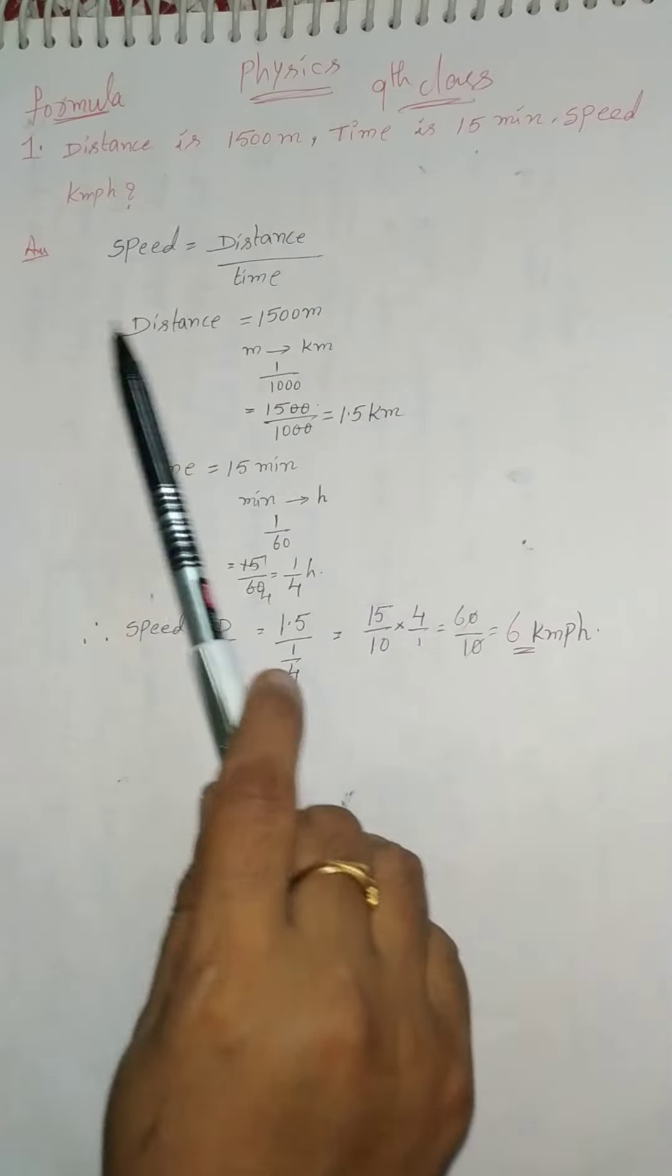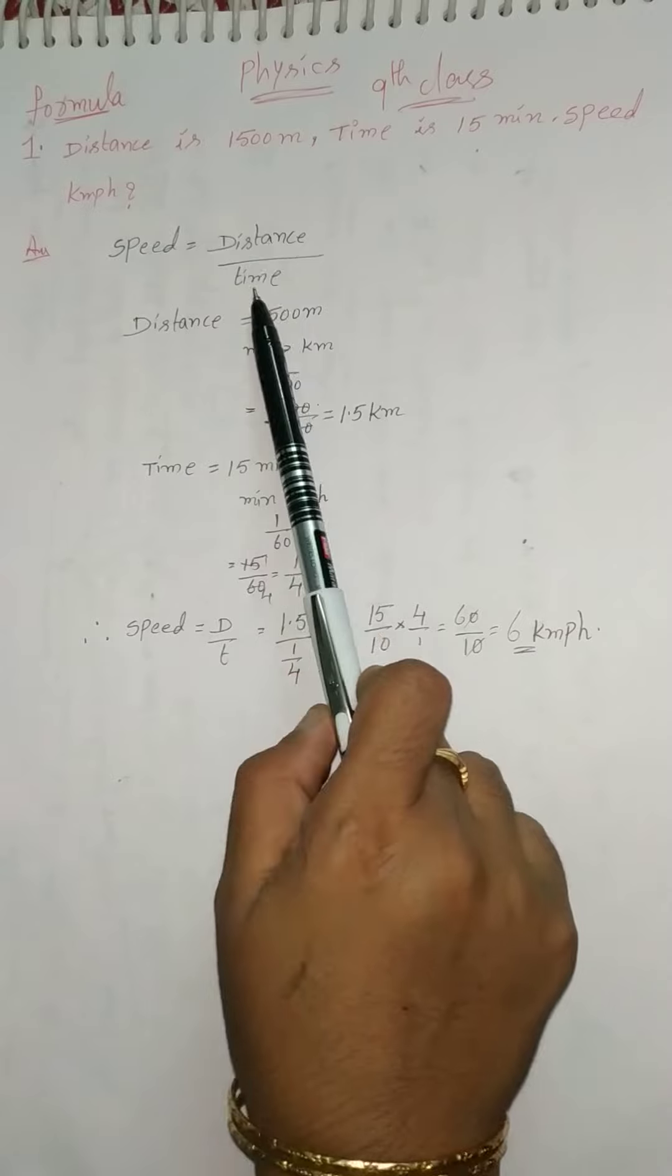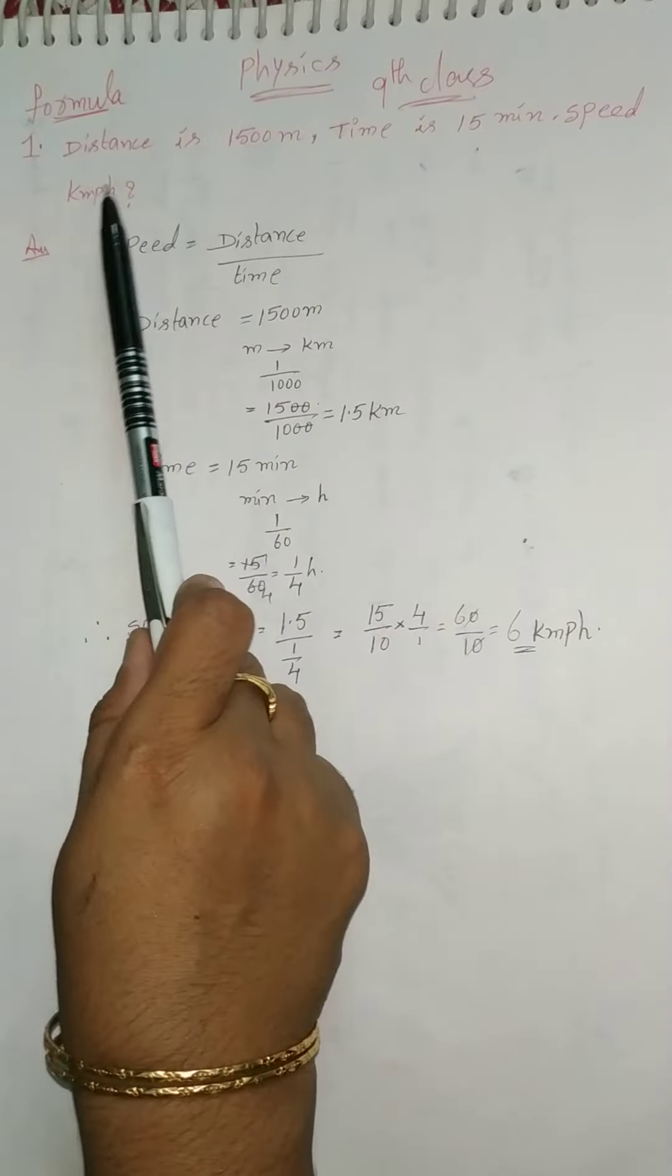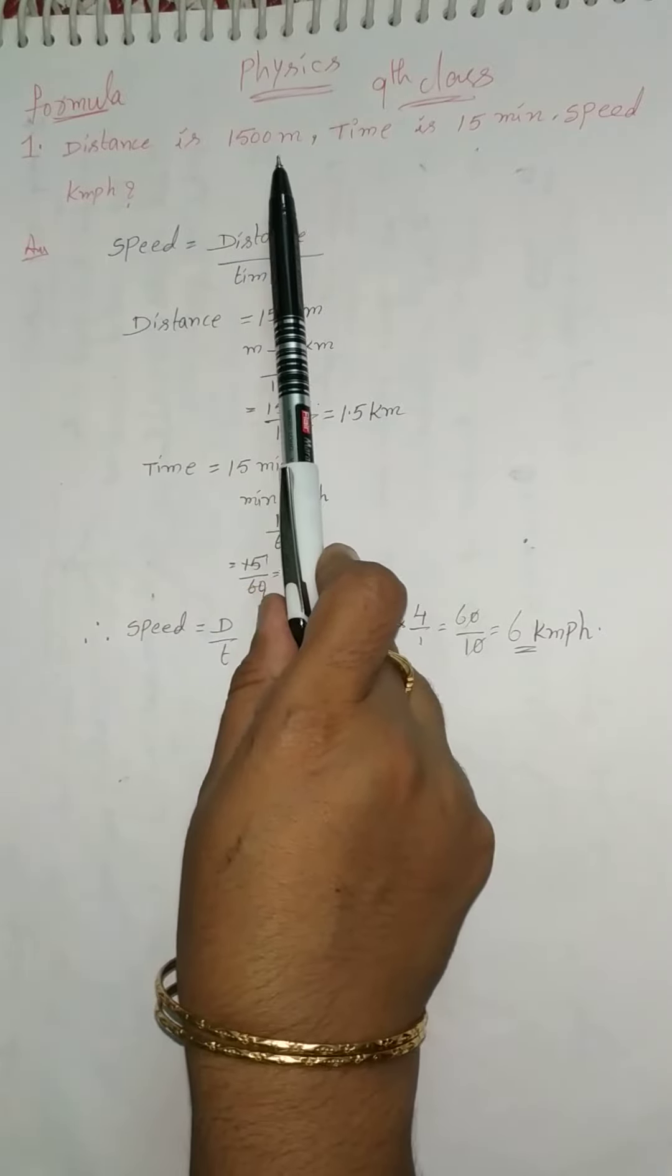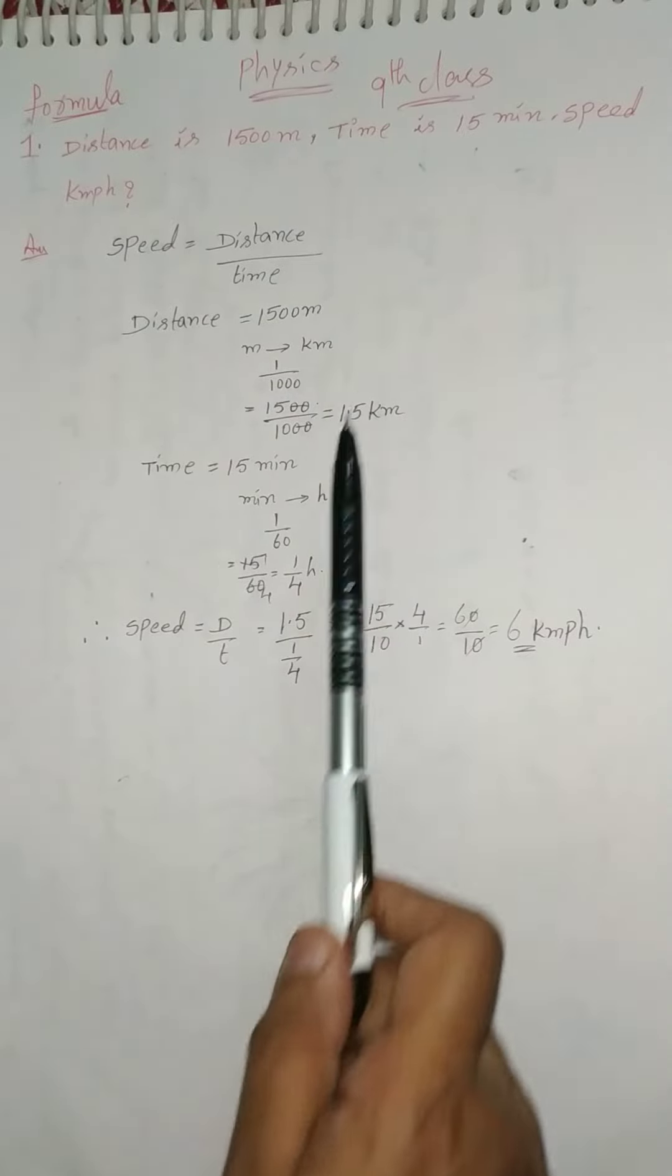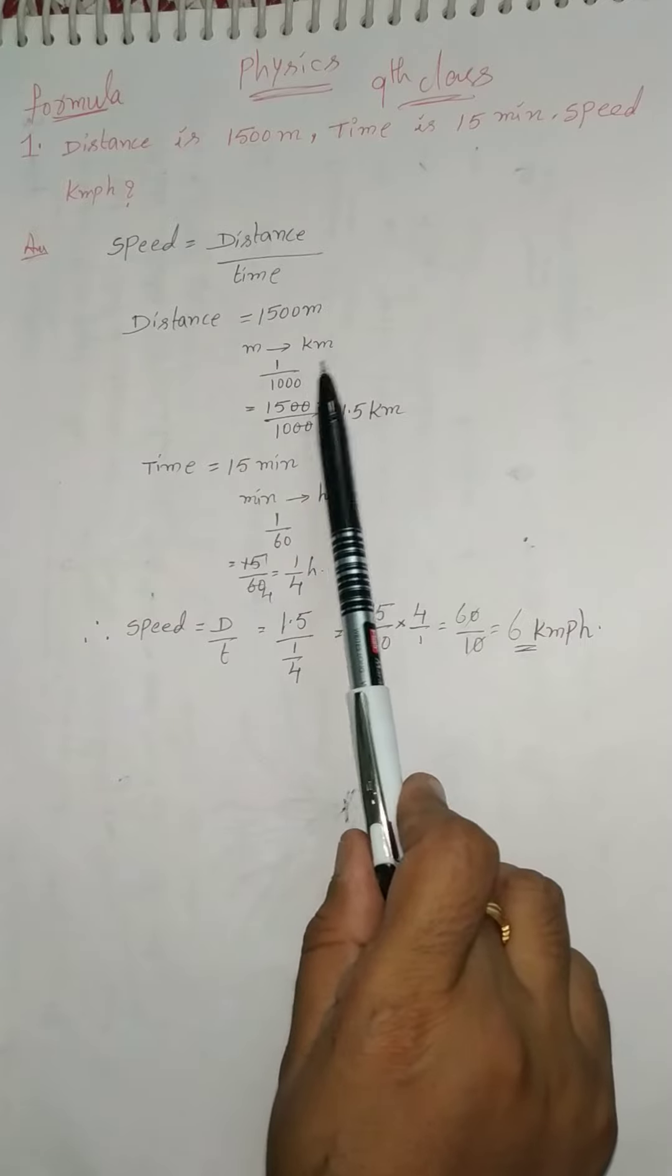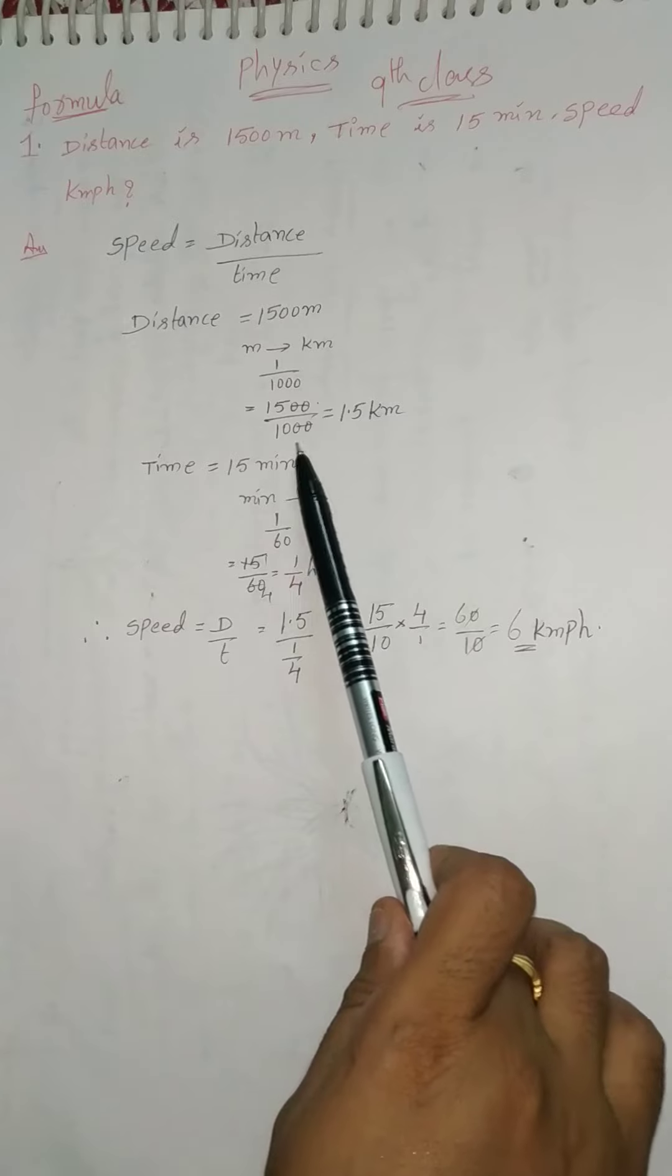First of all, we know the formula: speed equals distance by time. The speed is kmph. Find the speed in kmph. So we change the distance in meters into kilometers. Distance equals 1500 meters. We change the meters into kilometers, means we divide by 1000. So 1500 by 1000 means 15 by 10, means 1.5 kilometers.